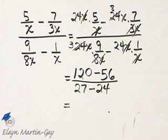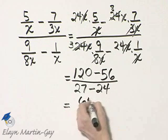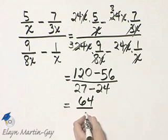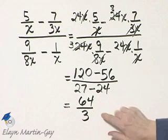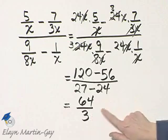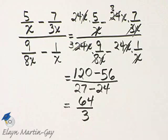So that's 64 over 27 minus 24 which is 3. Notice there's no common factor in 64 and 3, so there it is just completely simplified.